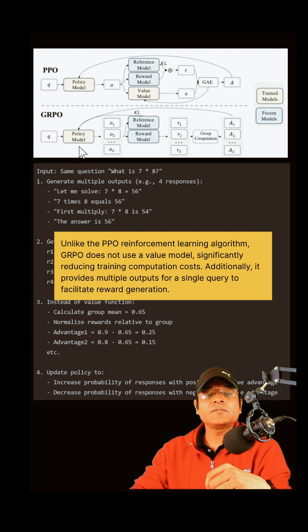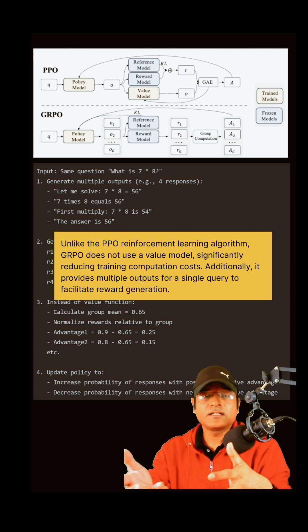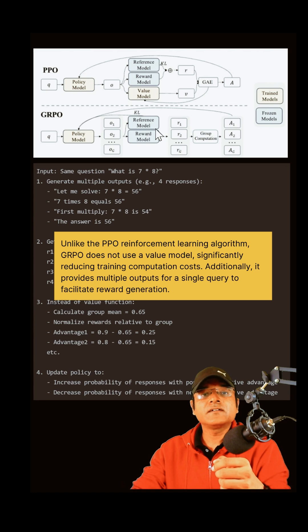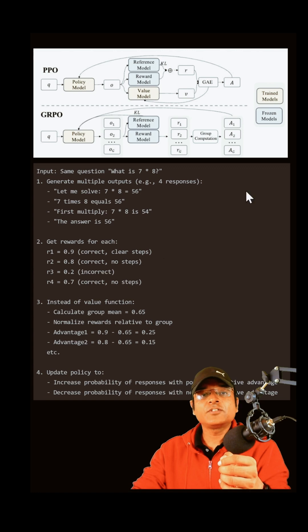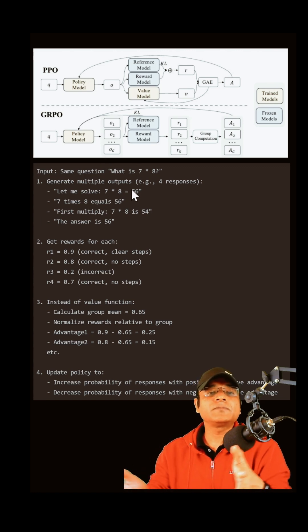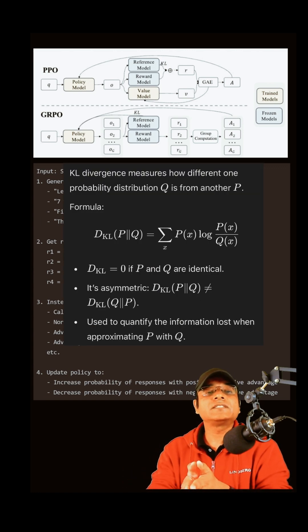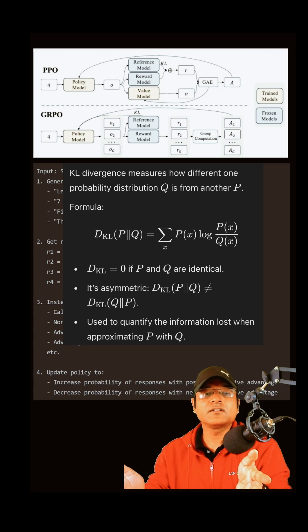The policy model is basically your pretrained model, or base model. The base model used here is DeepSeek version 3 base. The reference model is basically a frozen state of this same base model. We need this because during optimization, there may be chances of deviation where your probability distribution deviates a lot from your reference model, and it may catastrophically forget what it learned during pretraining.